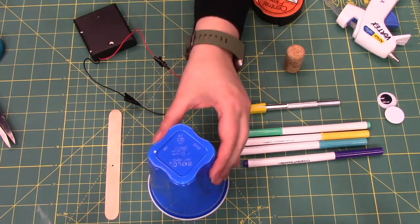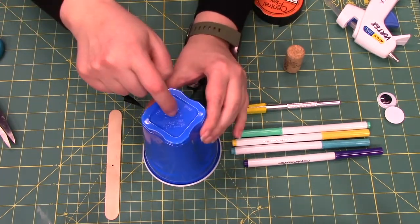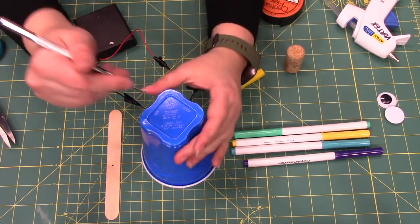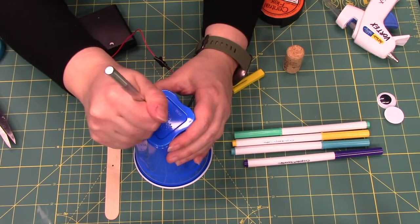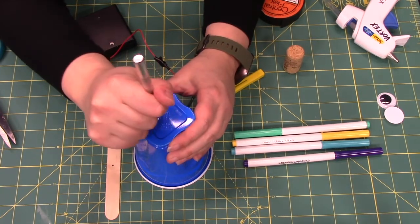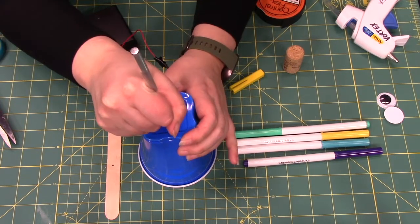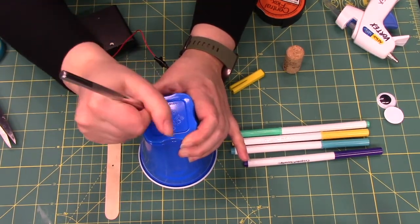So next step is we're going to take the cup and we're going to poke a hole right in the center. I'm actually going to use the exact knife very carefully and try to make a little gouge. There we go. And I'm going to make an X. Make sure that you get a parent's help with this part of the project.